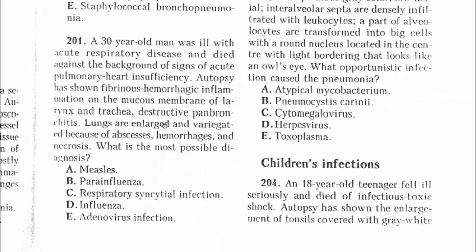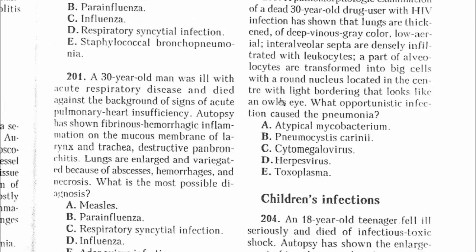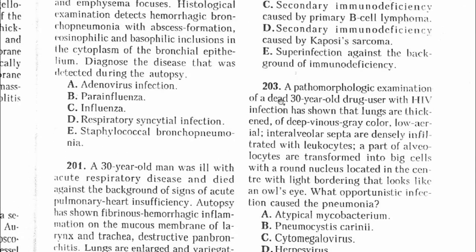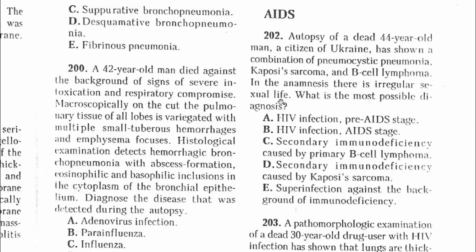Question 202: Autopsy of a dead 44-year-old man, citizen of Ukraine, showed a combination of pneumocystic pneumonia, Kaposi's sarcoma, and B-cell lymphoma. This person has HIV infection at an advanced stage. The answer is B.